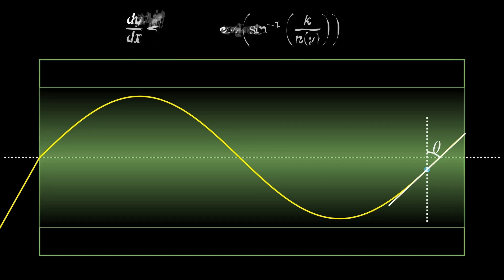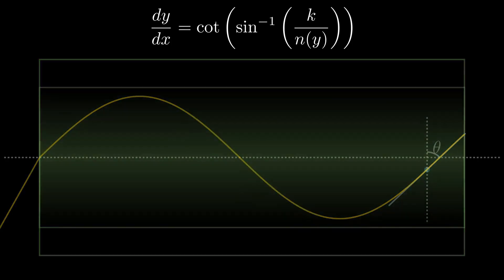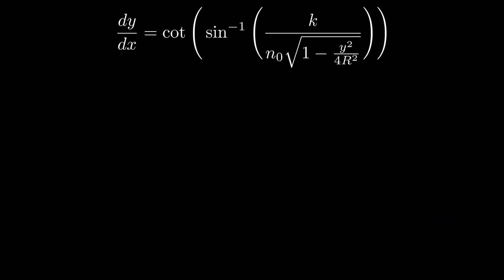So to recap, we know that at any point along the curve, the angle between the tangent line and the normal line is the inverse sine of k over n of y, and the slope of that tangent line is the cotangent of theta. We can plug the first equation into the second, giving us the slope of the tangent line, aka dy/dx, as a function of y. Our hope is that using this equation, we can do some reverse engineering to find an explicit equation for the shape of this curve. The only problem is that the equation on the right looks super messy and hard to work with, so let's clean it up first. Conveniently, we have a trig function and an inverse trig function, so let's see if we can get those to cancel out somehow.